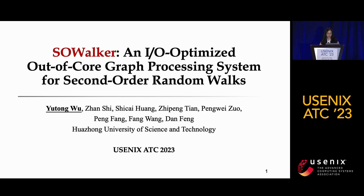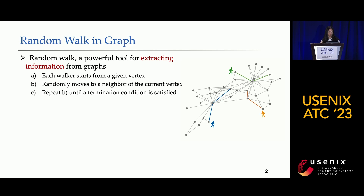Good morning, everyone. I'm Yutong Wu from Huazhong University of Science and Technology. Today, I will introduce SOWorker, an optimized out-of-core graph processing system for second-order random walks.